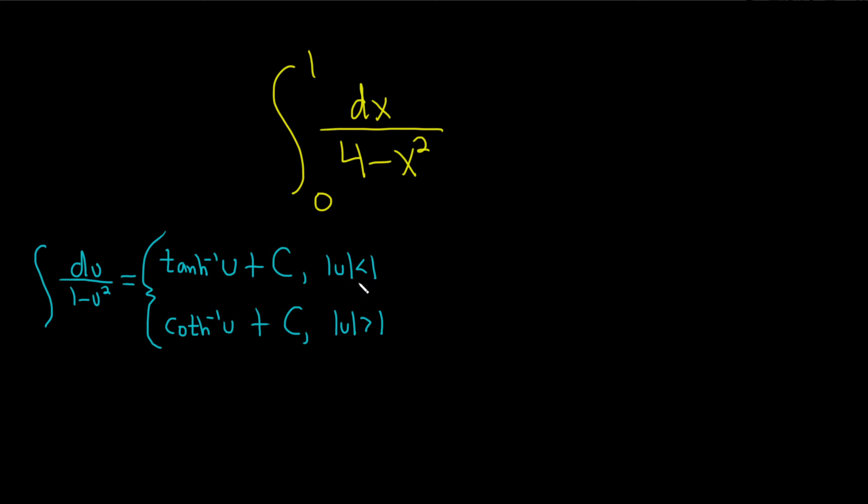So in this problem we first have to figure out how to even make this look like this. You'll notice there's a 4 here. So what we'll do is pull out a 1 fourth like this. 1 fourth dx. I'm factoring out a 4 from the bottom. So we have 1 minus x squared over 4. And we're going from 0 to 1.